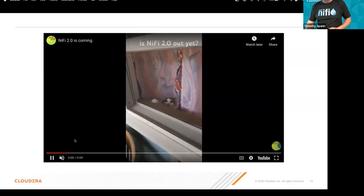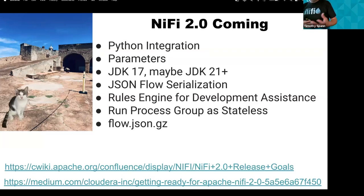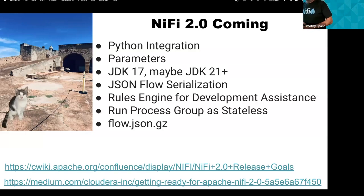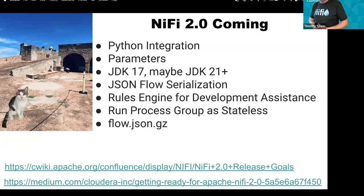NiFi 2 is not out yet — you can download the beta. Coming up: the ability to run Python properly, isolated so it doesn't interfere with other processes. Right now executing Python can step on other things, or we have to use Jython which isn't great. Parameters will be first-class everywhere. We're targeting at least JDK 17, with JDK 21 very possible as a separate branch.